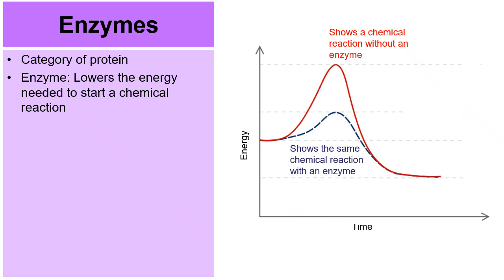Now, in this blue line, the blue line shows the same chemical reaction. But notice how the hump is a lot smaller. Much less energy was needed to start the chemical reaction because, in this case, an enzyme was used. So, the same chemical reaction is performed with much less energy. Enzymes are beneficial in lowering the energy needed to start a chemical reaction.